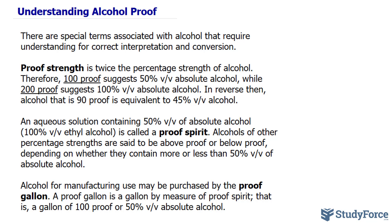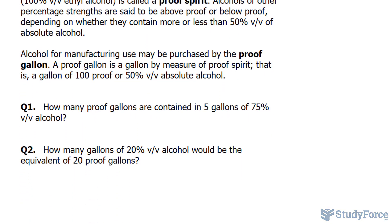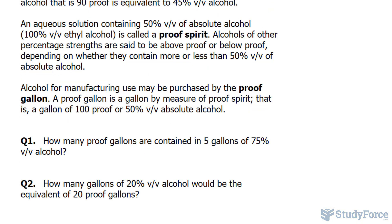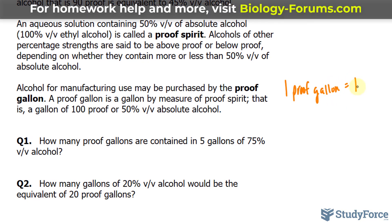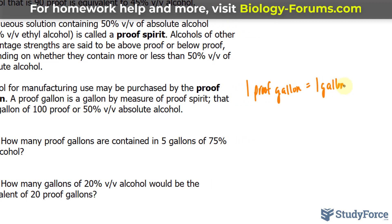An aqueous solution containing 50% volume per volume absolute alcohol is called proof strength, or proof spirit. The alcohol we're talking about here is ethyl alcohol. Alcohols of other percentage strengths are said to be above proof or below proof, depending on whether they contain more or less than 50% volume per volume absolute alcohol. Furthermore, alcohol for manufacturing use may be purchased by the proof gallon. A proof gallon is a gallon by measure of proof spirit, so one proof gallon is equivalent to one gallon of solution containing 50% alcohol.